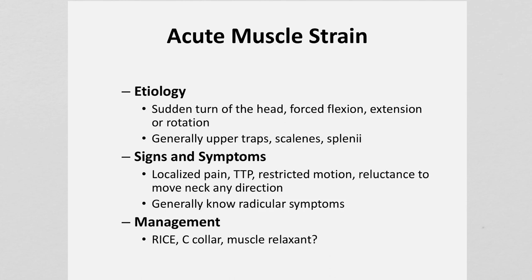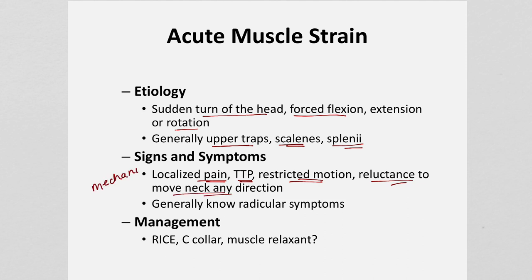Moving to pathologies we're more comfortable with: an acute muscle strain always occurs as a result of overstretching of a muscle group — a sudden head turn, forced flexion, hyperextension, or rotation. Most cervical muscle strains impact the upper traps, scalenes, and splenius muscles. Signs and symptoms include localized pain in the muscular area, tenderness to palpation, restricted range of motion depending on which muscle is involved, and reluctance to move the neck. This is all mechanical pain. A patient with a muscle strain most often does not have radicular signs and symptoms — if they do, you can typically rule out a pure muscle strain.